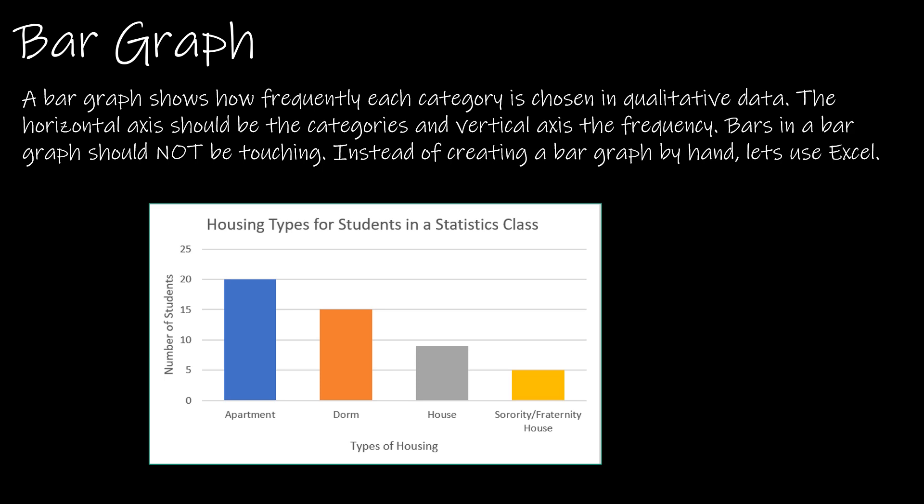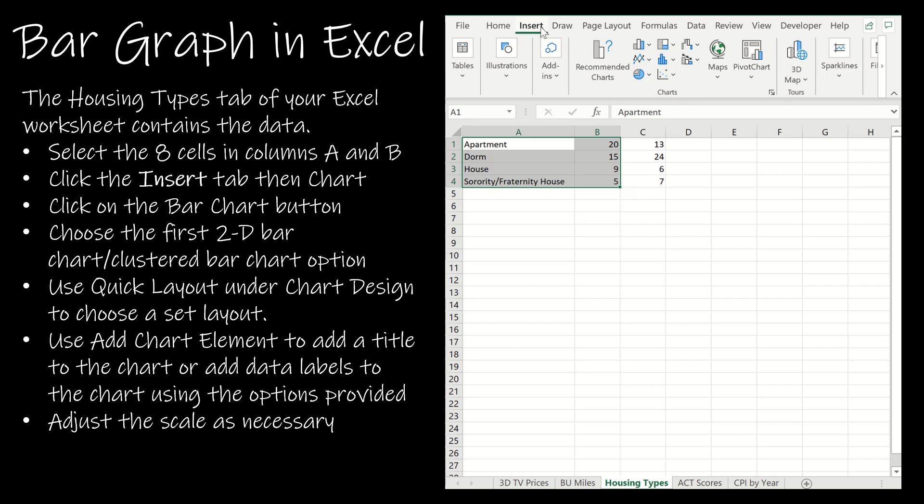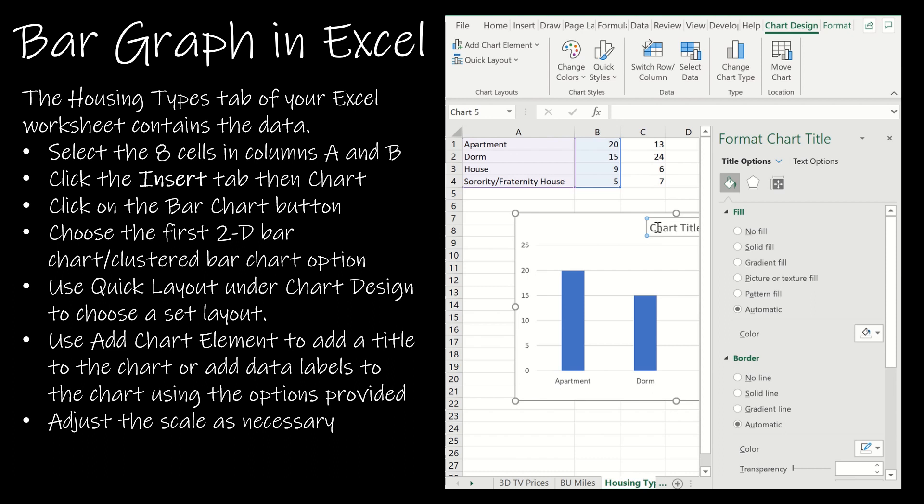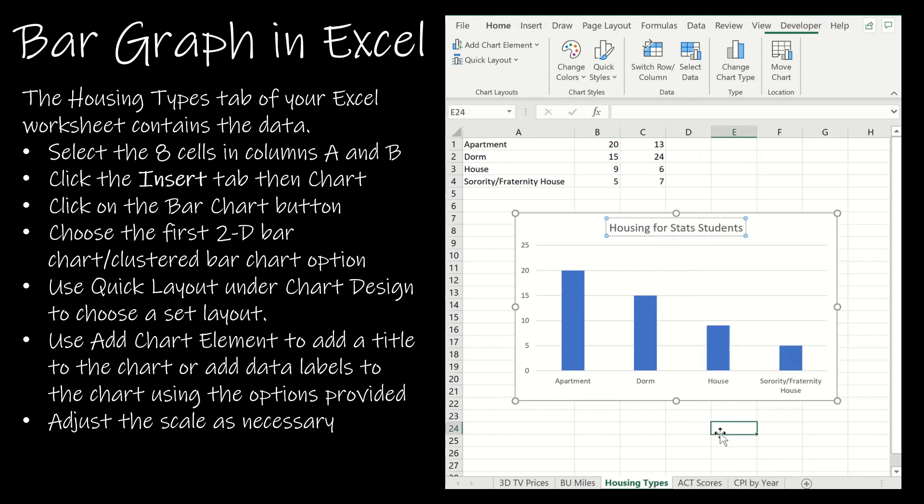In Excel, I select the same data and go to the insert tab. Instead of choosing the pie or donut chart, I choose the column or bar chart—the first 2D clustered column option. I'll change the title to 'Housing for Stats Students.' I have labels for each bar and a numbered frequency on the left, but I don't have axis titles. I click on the plus, select axis titles, and change them. This is 'Housing Option' and this is 'Frequency.'